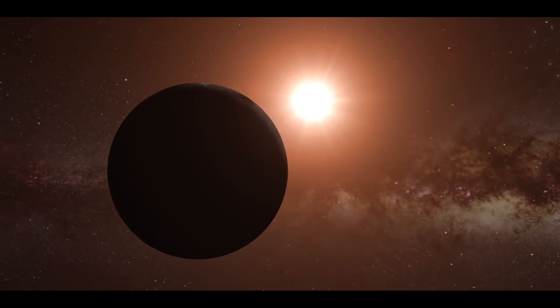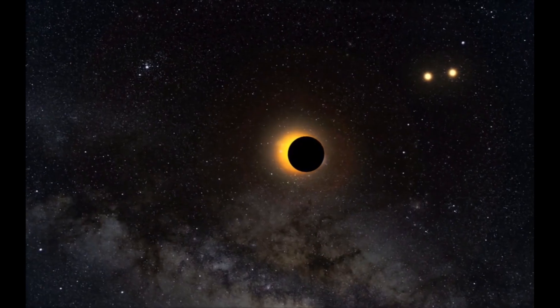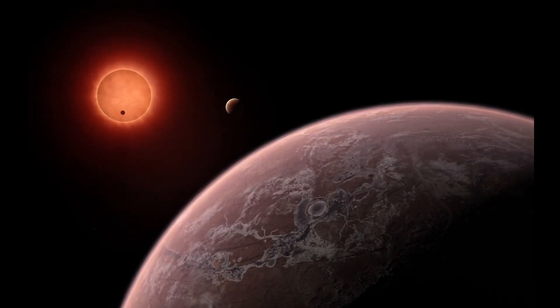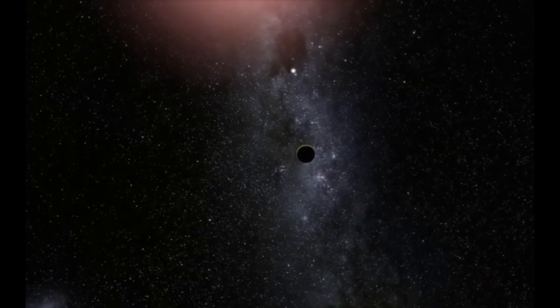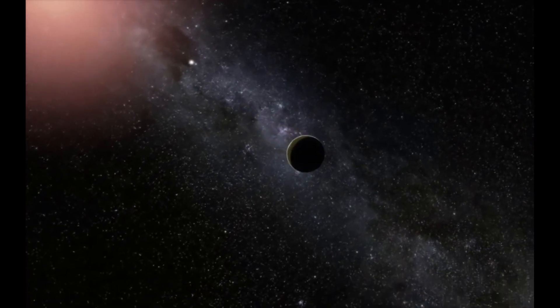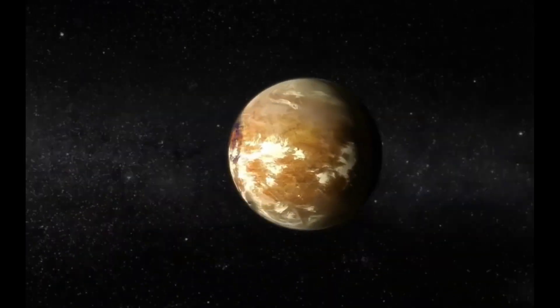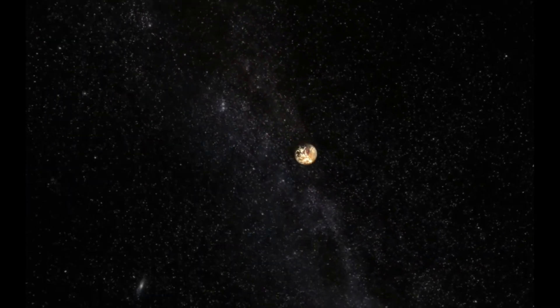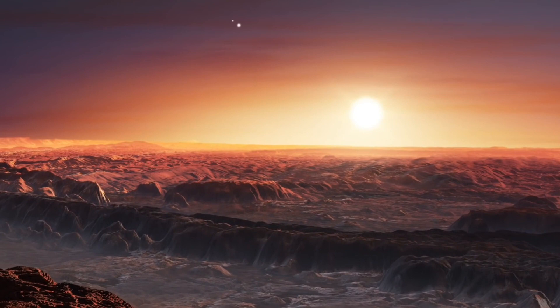Likewise, exoplanets are very dim and hence even harder to detect. Another exciting thing about exoplanets is that there are many types such as hot Jupiter and some that are called super-Earth because they are similar in composition to Earth. Moreover, exoplanets that contain water, another sign of life, are called ocean worlds.